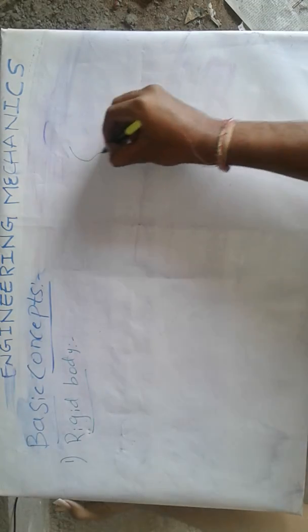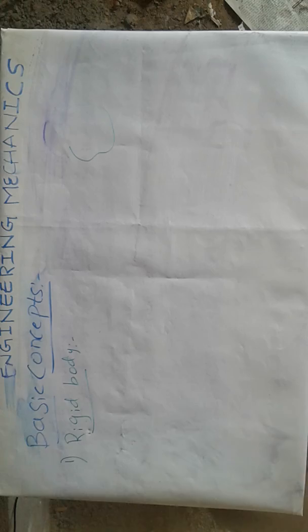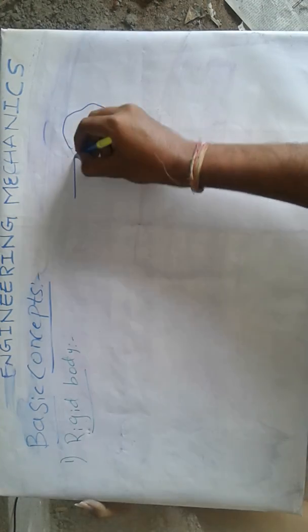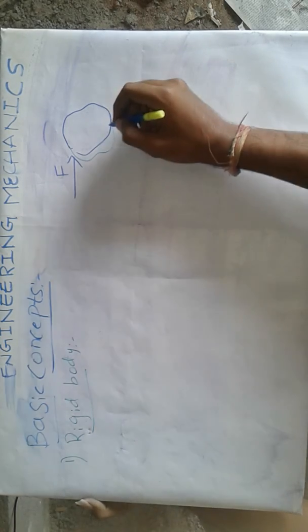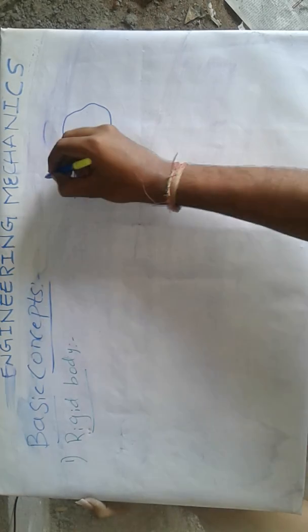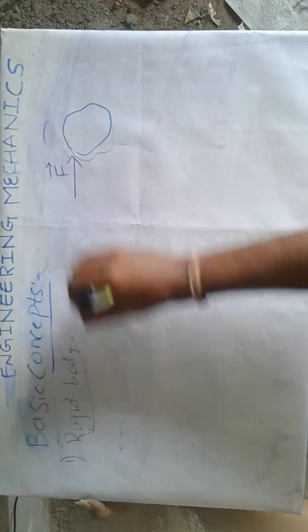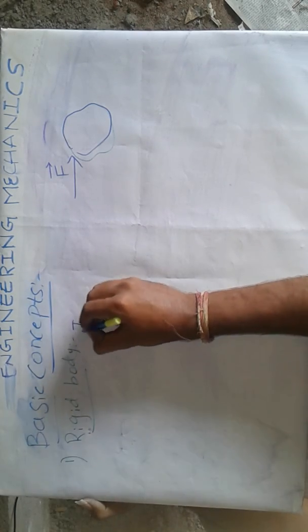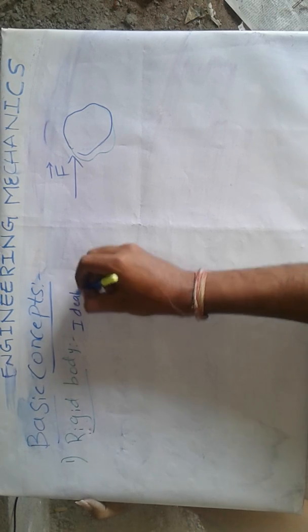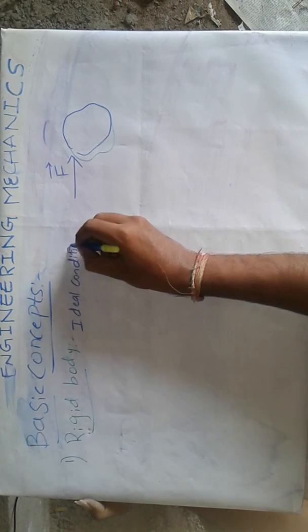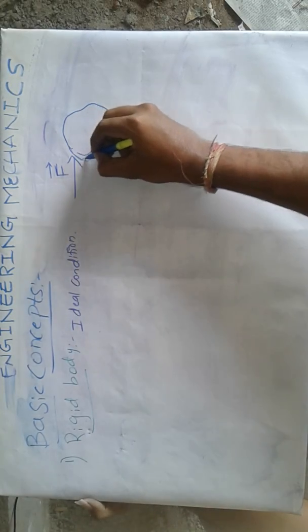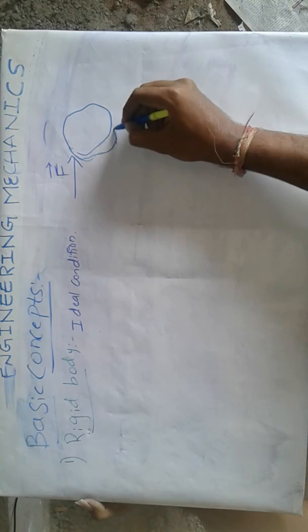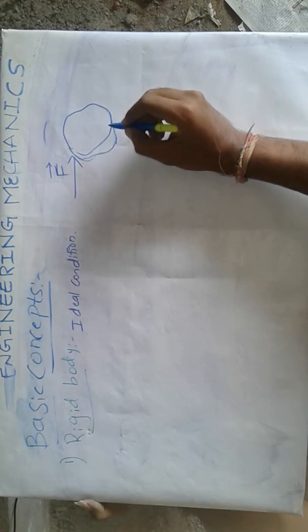Rigid body in the sense: suppose consider a body. Whenever a force is applied on this particular body and there is no deformation that takes place — nothing but the size and shape are fixed even after the application of force — then that particular body is said to be a rigid body. But it is an ideal condition. No body in the universe is a rigid body, because after the application of force, the size and shape will be changed. It means some deformation will be produced in the body.